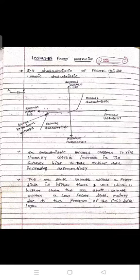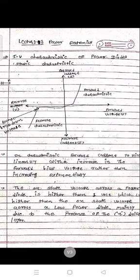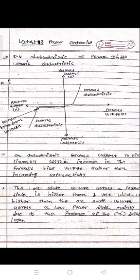This is the IV characteristic of a power diode. Here the y-axis is forward voltage and the x-axis is forward current, reverse current, and reverse voltage. In the forward region, current rises linearly with the increase of forward bias voltage. The characteristic has two parameters: current and voltage. Current has two parts — forward current and reverse current — and voltage has two parts — forward voltage and reverse voltage.